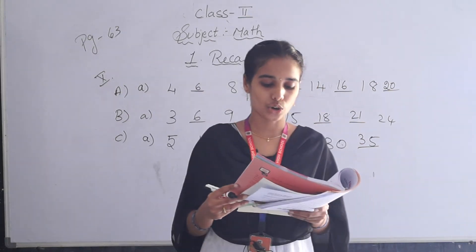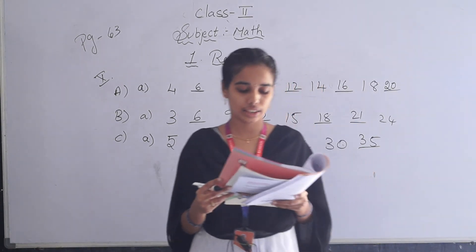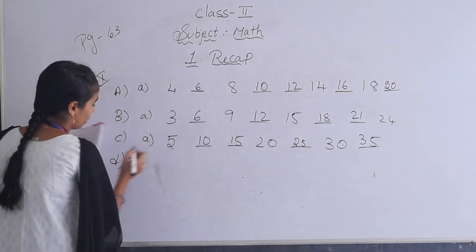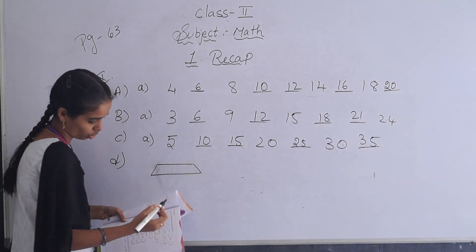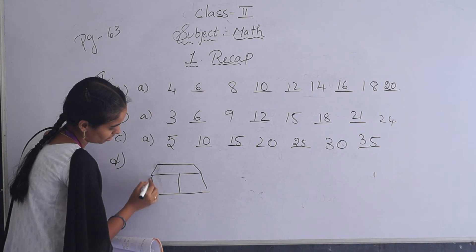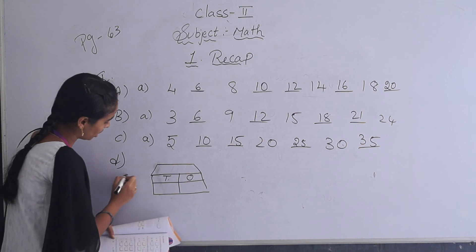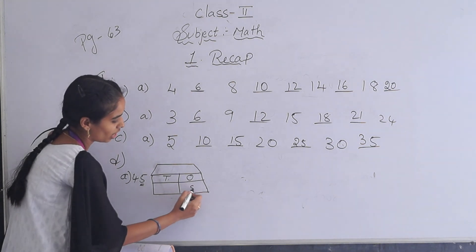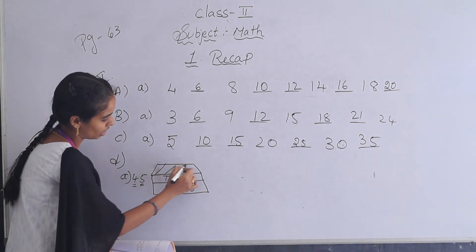Next, last one: Draw the place value house and write the following numbers in it. They given some numbers now. For that you have to draw one place value house. Place value house is nothing but ones place. Here only 2 digits means 2 boxes. That is 1st place and 10th place. First, which number they given? 45. In 1st place which number is there? 5. So here you have to write 5. In 10th place, 4. This is the place value house.